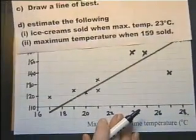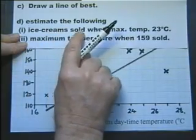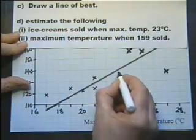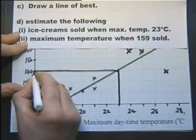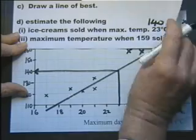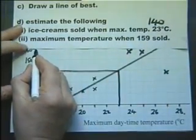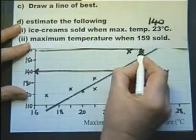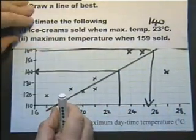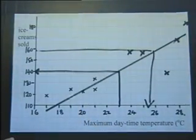Then we could possibly ask to find some information. Estimate the following. The number of ice creams sold when the maximum temperature is 23 degrees. So we find 23 degrees. We go up here. We go across. And we can say approximately 140 were sold. Maximum temperature is 159. So here we can go 159 is about there. Go across. And we can go down and say what the temperature is. So that is being able to show data on a scatter graph. Be able to draw the line of best fit. And read information.